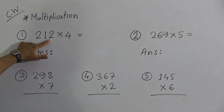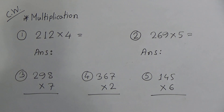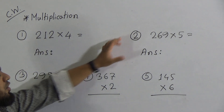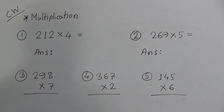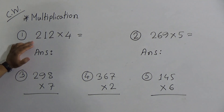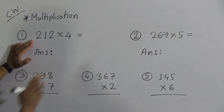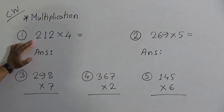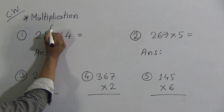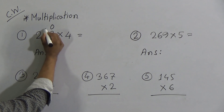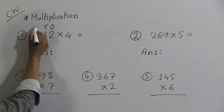The first multiplication is 212, which needs to be multiplied with 4. Number 1 and number 2 are horizontally written, and numbers 3, 4, and 5 are vertically written. We can multiply both horizontally and vertically; if you want to do rough work, you can do it in extra space and write down the answer directly. Now look — this 2 is in the 1's place, this 1 is in the 10's place, and this 2 is in the 100's place.